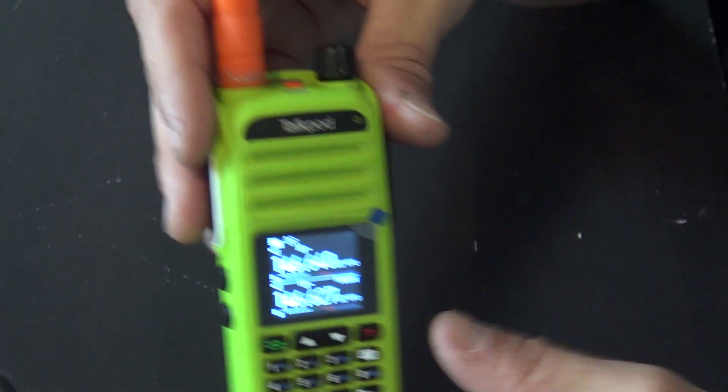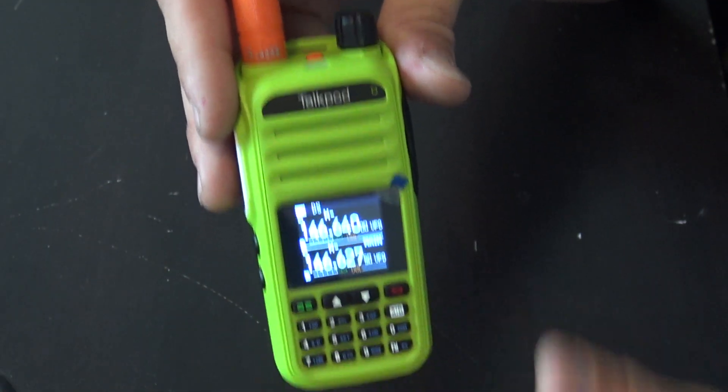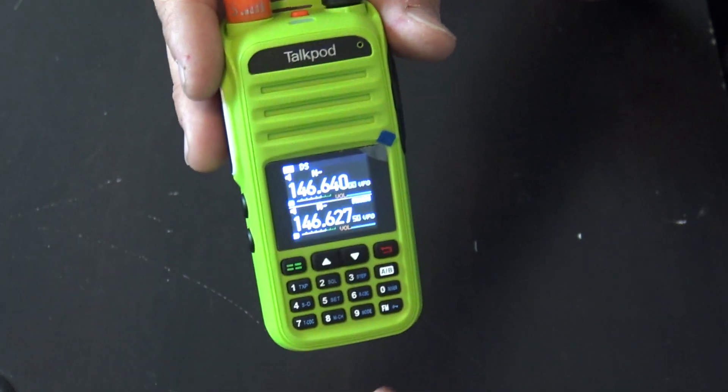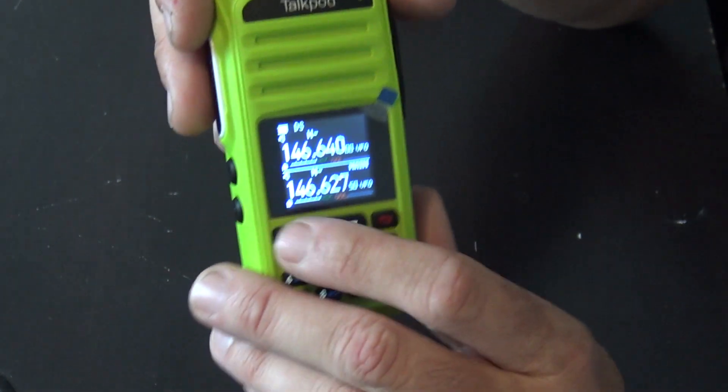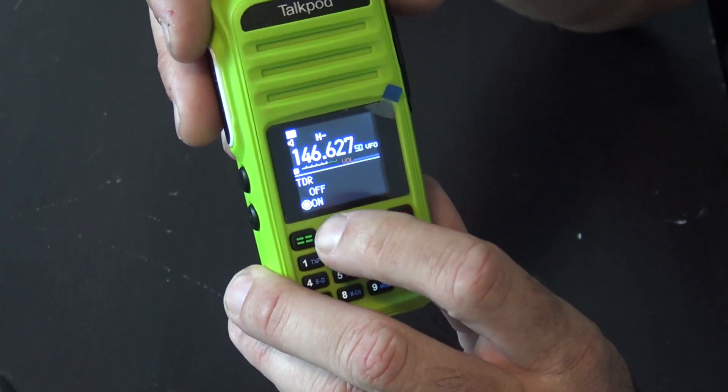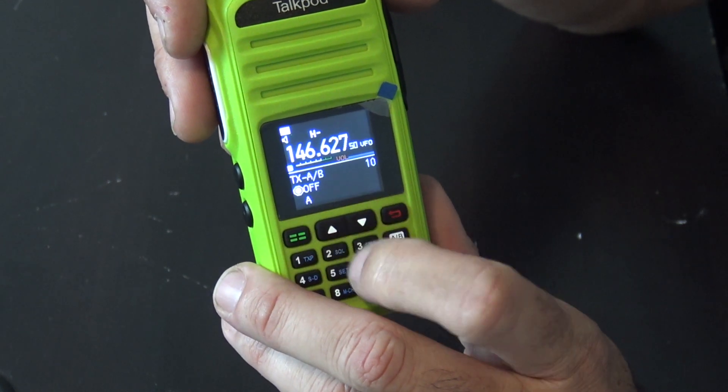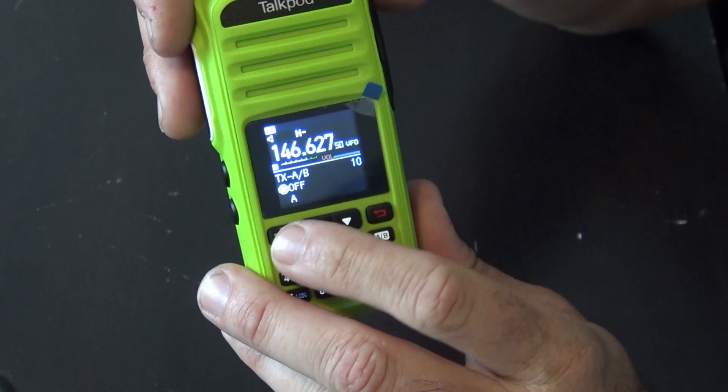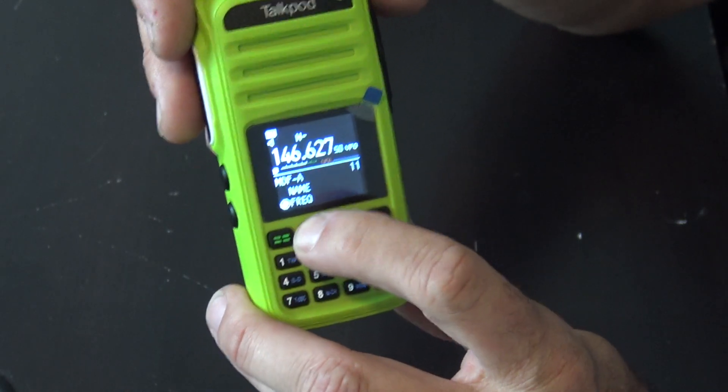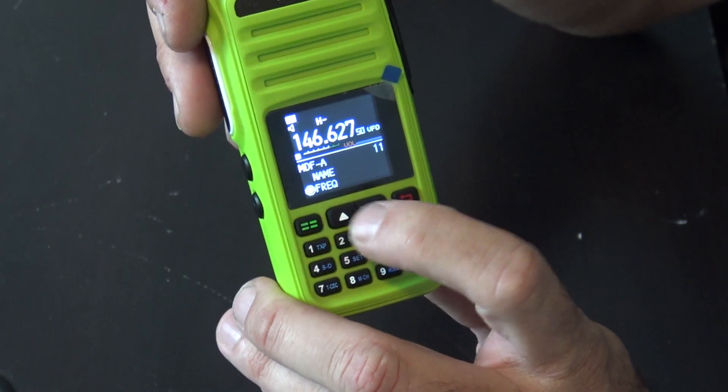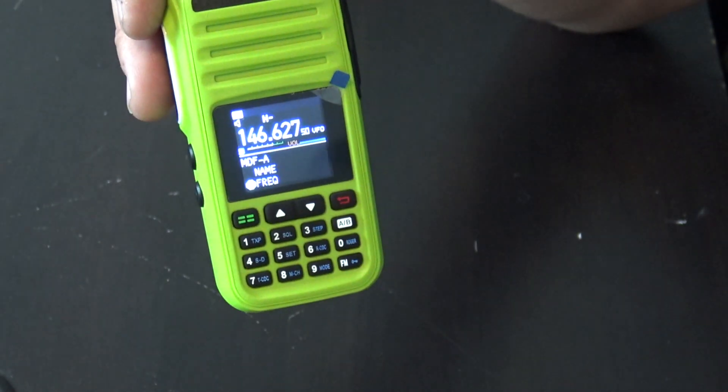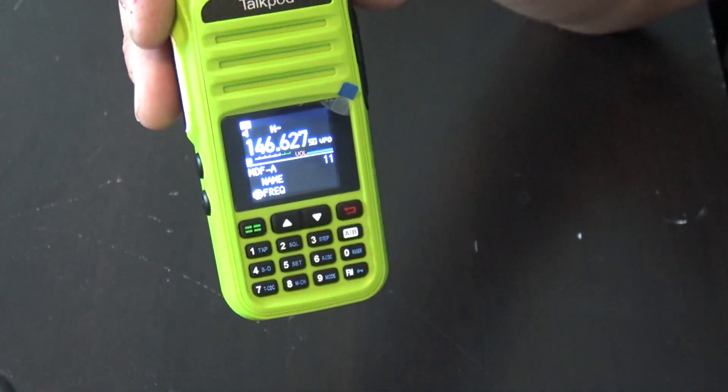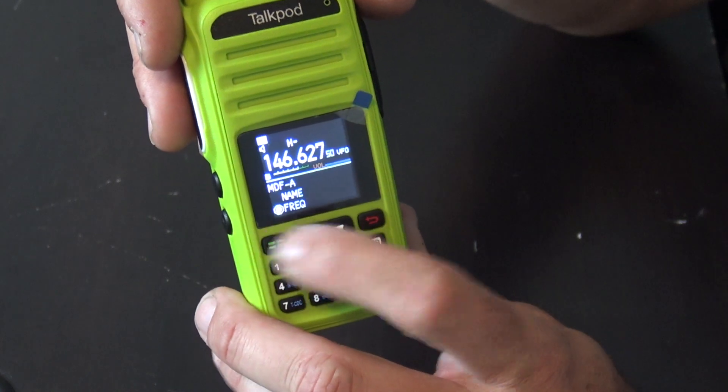They do have different colors. They have the crystal, which is kind of a clear, a silver, a black, a red, and a green. I chose the green when they asked me which one do you want. You can transmit A and B, so if you want to just have transmit on one and receive on another, you can do that. You can go VFO mode, frequency mode, or channel mode.